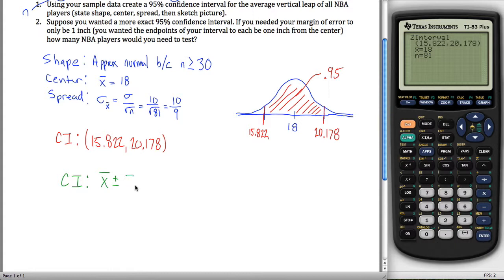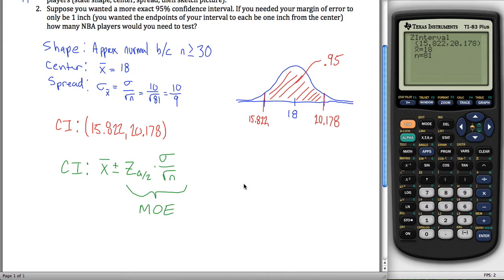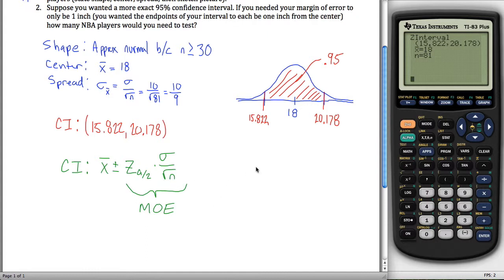And the way you get your margin of error is it's a z value, z sub alpha over 2 times your standard deviation, which is sigma over root n. This right here is called your margin of error. So what it's saying in this problem is we want our margin of error to only be equal to 1.